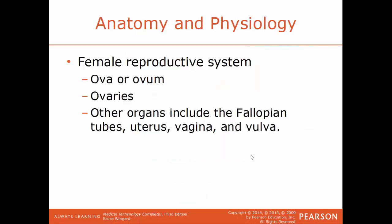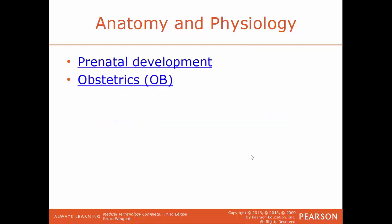For the female reproductive system, you have the ova, which is the plural form of ovum — another term for the eggs. The ovaries, and other structures such as the fallopian tubes, the uterus, the vagina, and vulva. These are terms that you'll see when it comes to the reproductive system.